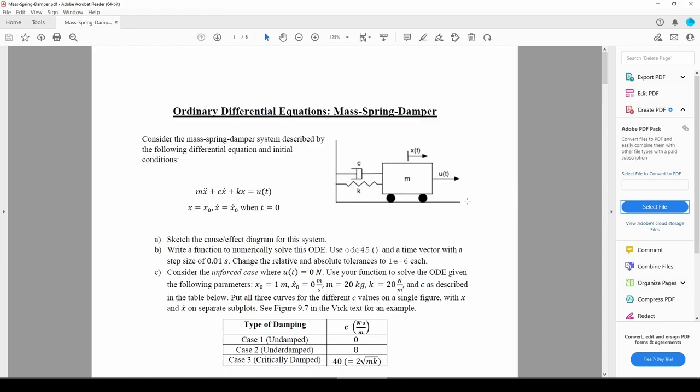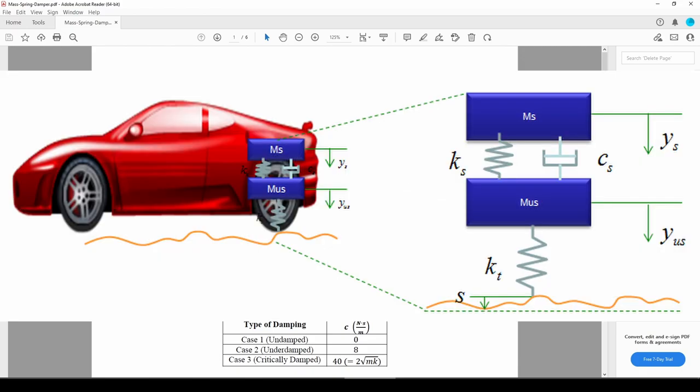The mass spring damper system is a quintessential problem in mechanical engineering. It's the basis of your vibrations course, and they can also be used to represent more complex mechanical systems such as a vehicle suspension system.